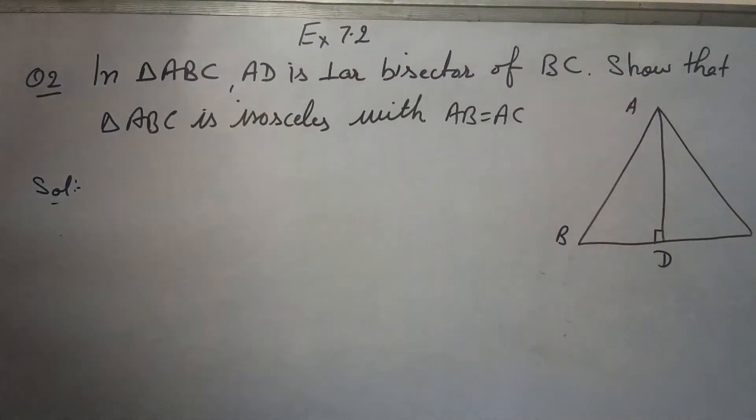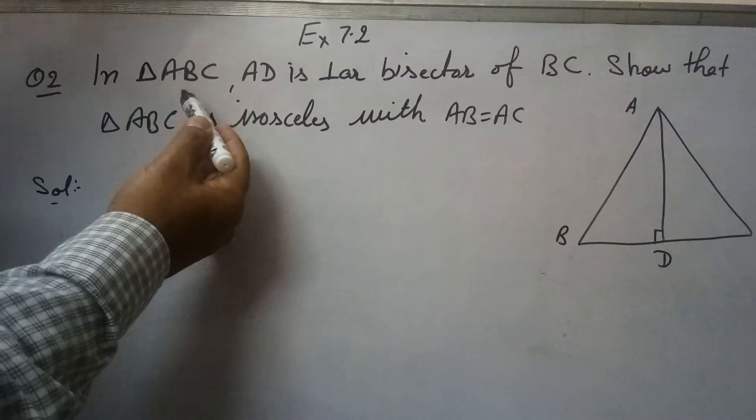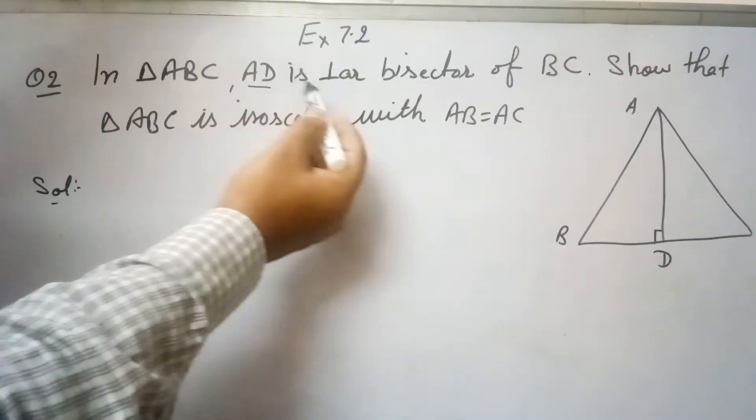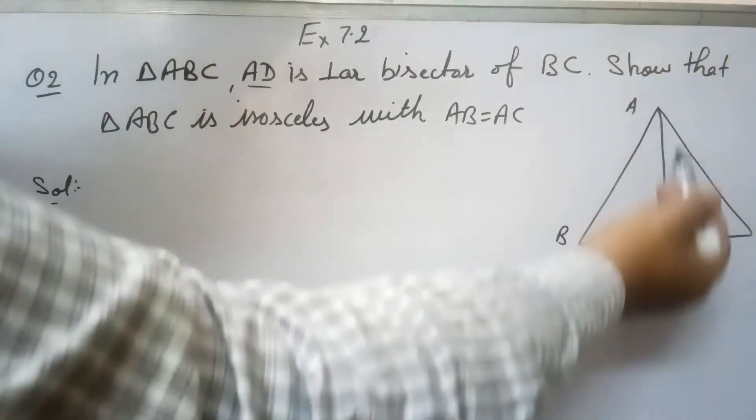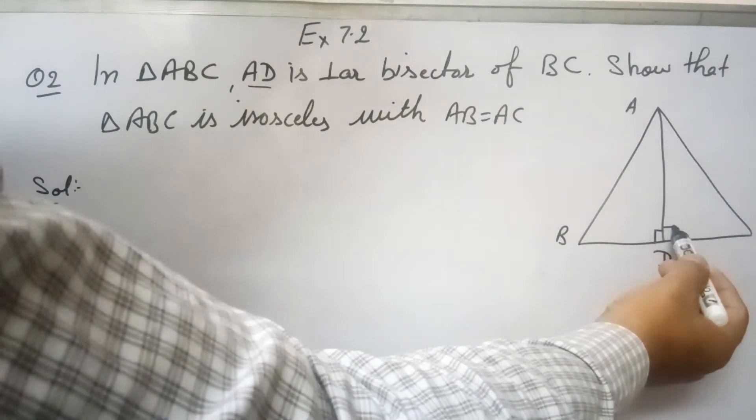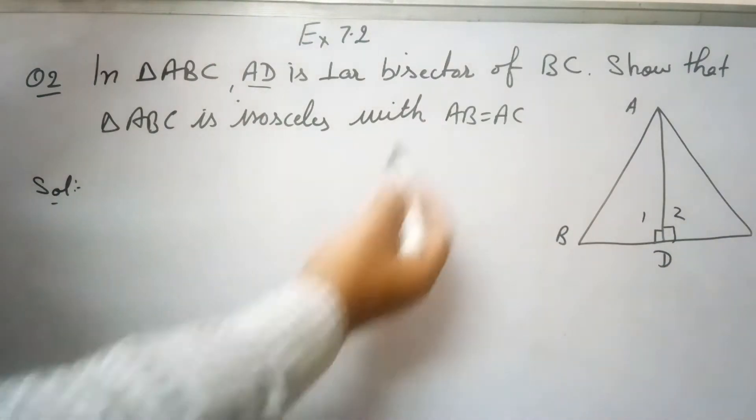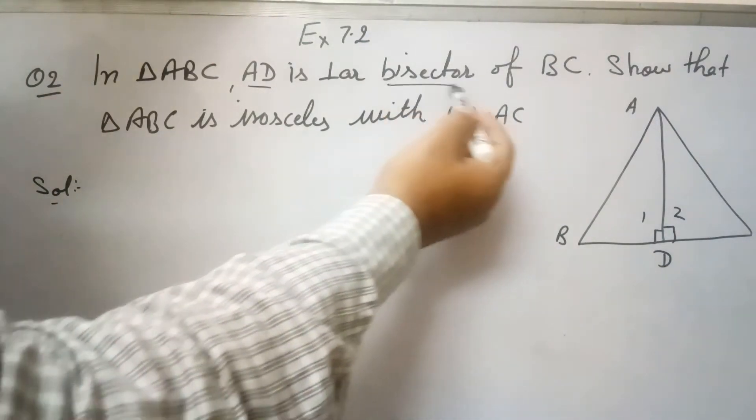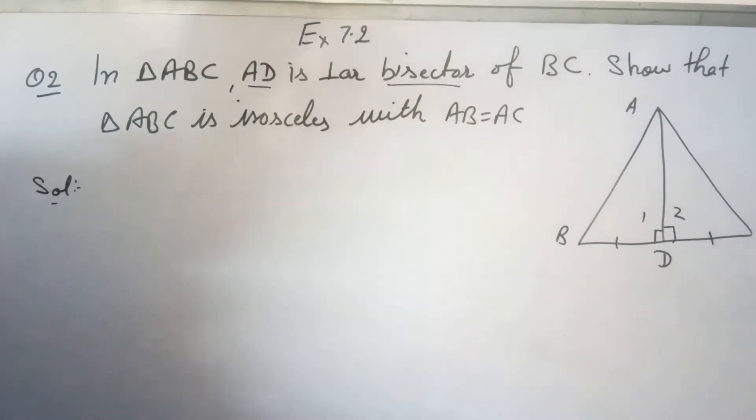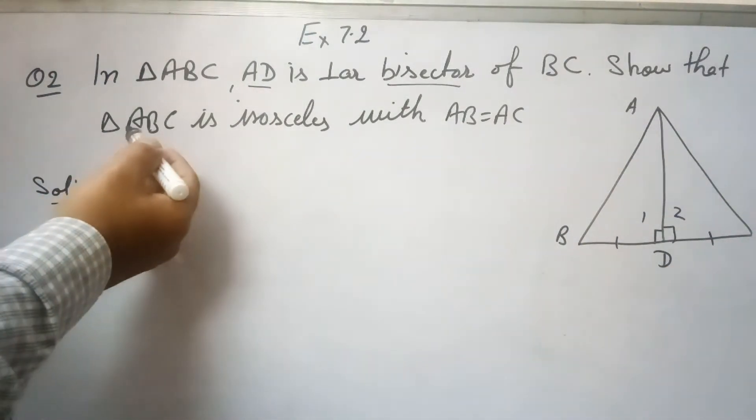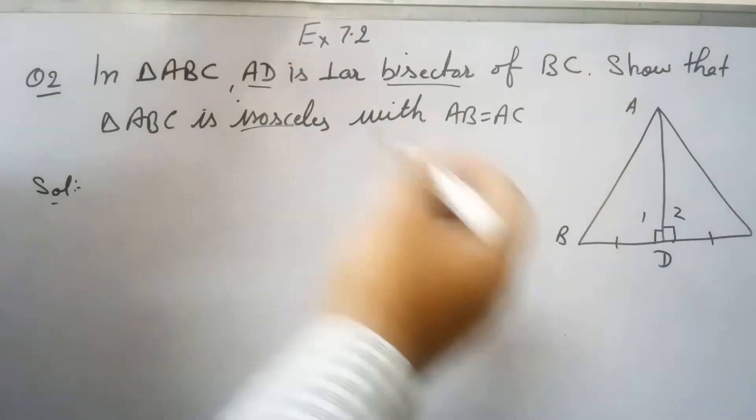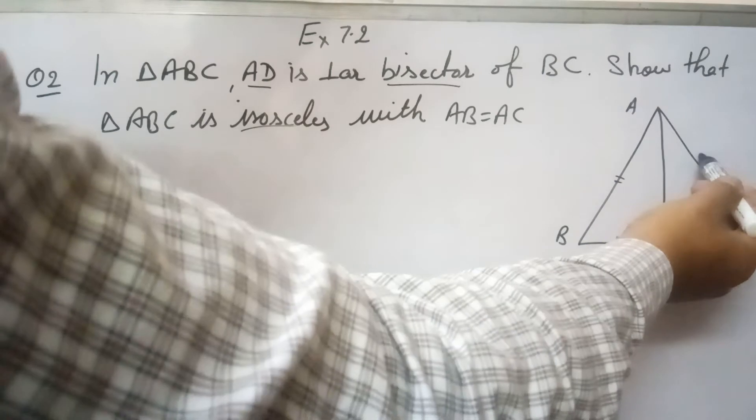This is question number two. In triangle ABC, AD is perpendicular bisector of BC. Show that triangle ABC is isosceles with AB equals AC. Perpendicular means angle 1 and angle 2 are 90 degrees. Bisector of BC means BD equals DC, so ABC is an isosceles triangle, isosceles means AB will be equal to AC.